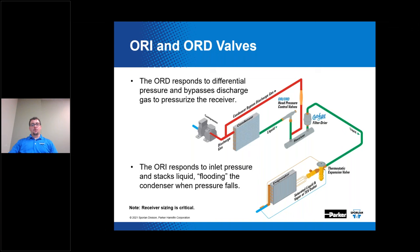To avoid erratic receiver pressure, you need a separate ORD valve to control that receiver pressure. The ORD gets its name from its operation — it's Opening on Rise of Differential Pressure. It pressurizes the receiver with discharge gas, maintaining a constant receiver/condenser pressure for stable TEV operation during low ambient. The ORD should be fully closed during high ambient conditions and only bypass discharge gas during low ambient temps.